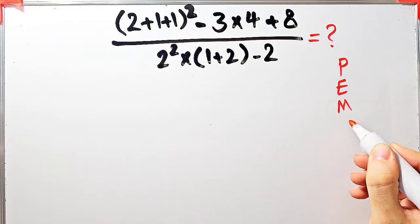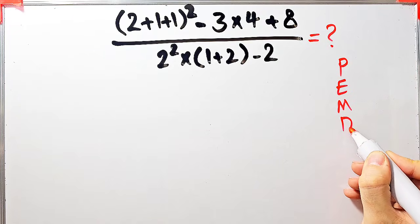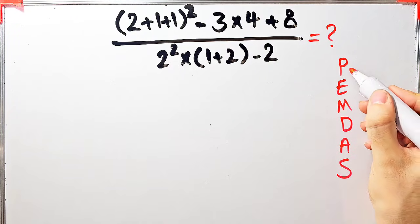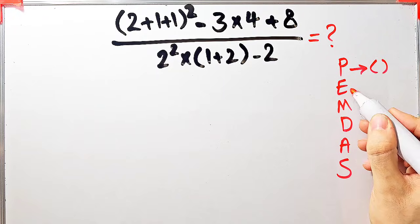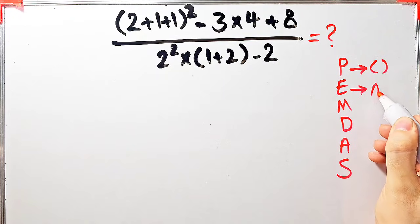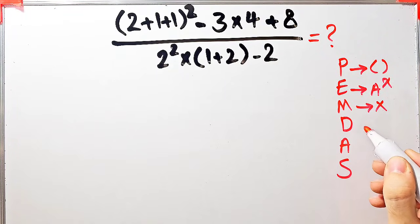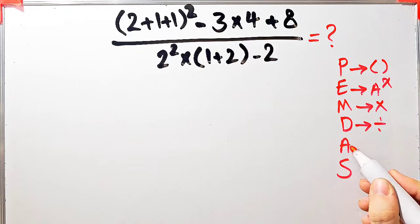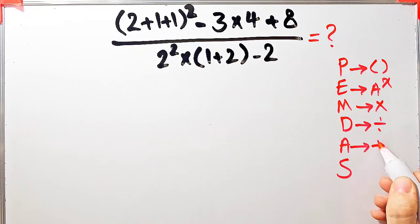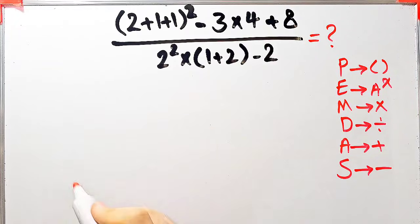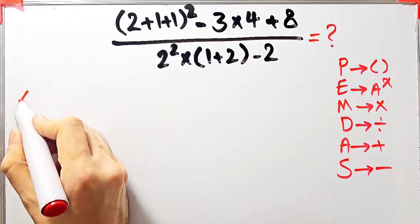To solve this question we need to follow PEMDAS. P stands for parentheses, E for exponent, M for multiplication, D for division, A for addition, S for subtraction. Let's simplify and solve this question step by step.